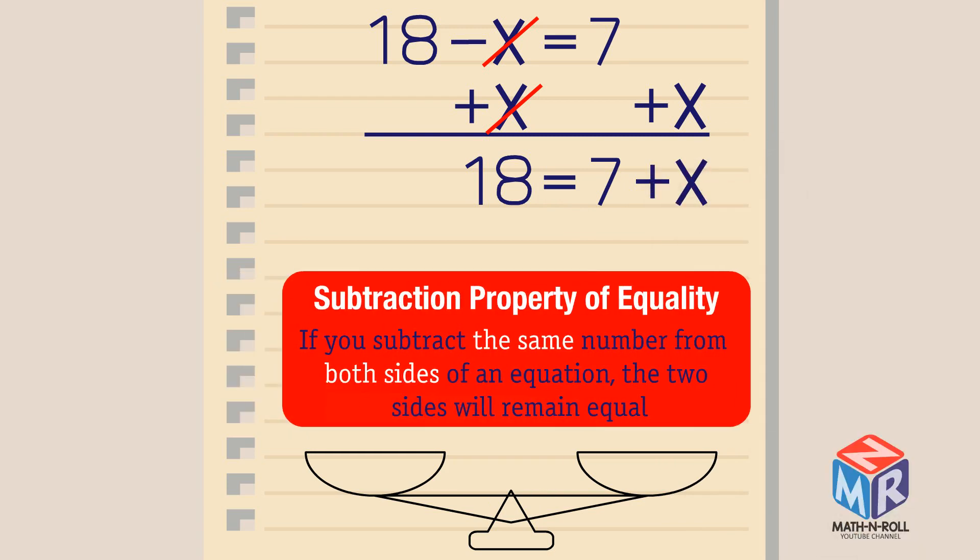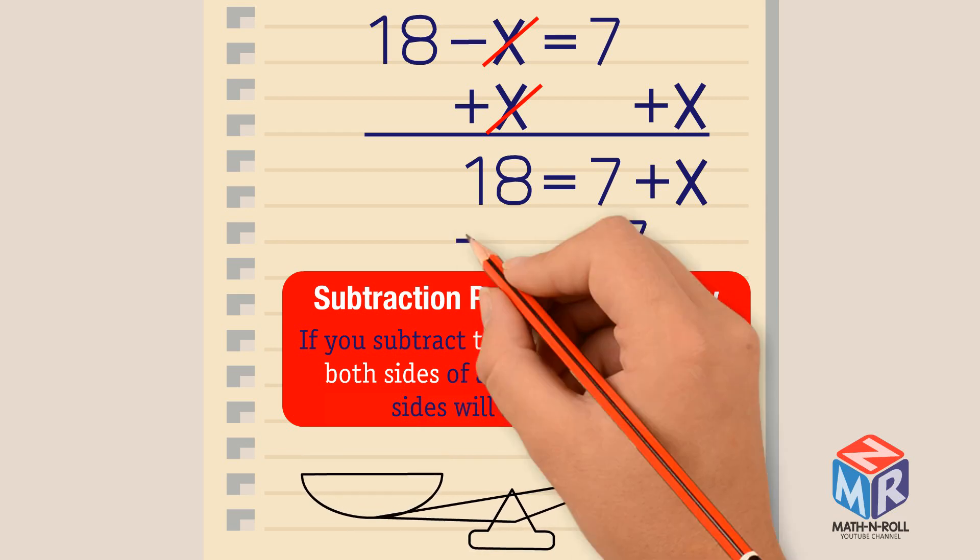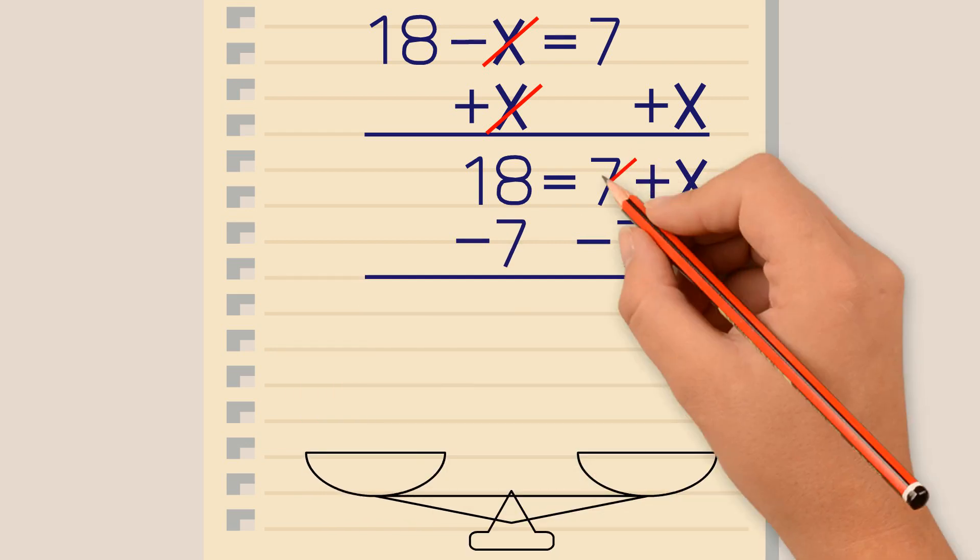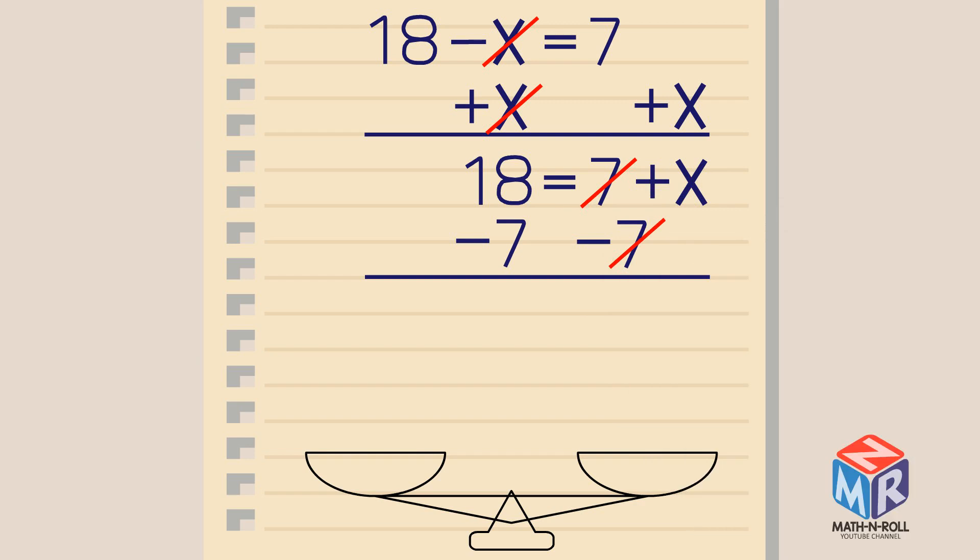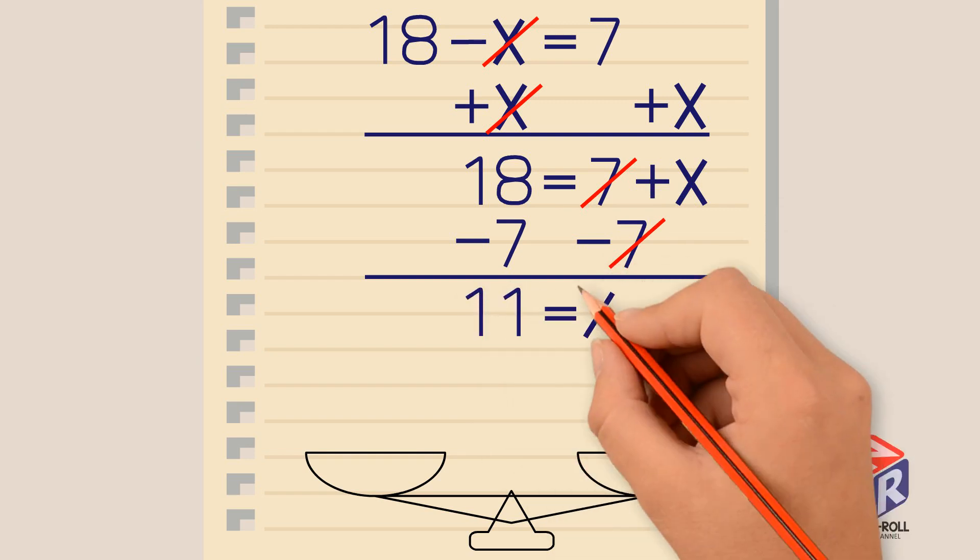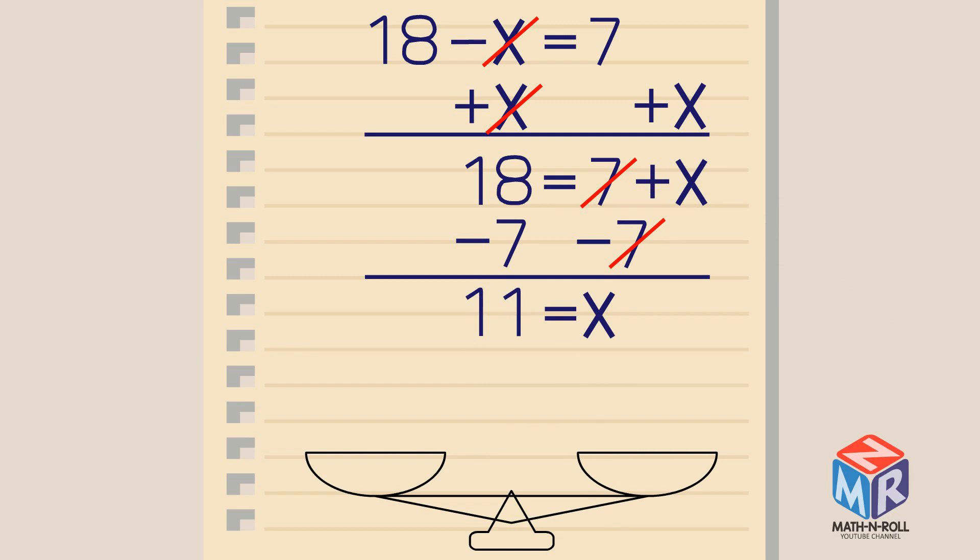Now we use the subtraction property of equality. We subtract 7 on both sides, cancel out, and we are left with 11 equals x. Let's rewrite our answer so that the x is on the left side. This leaves us with x equals 11.